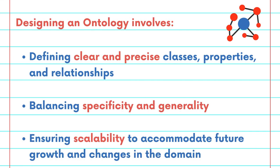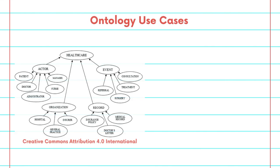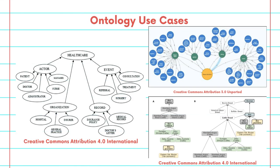Designing an ontology involves defining clear and precise classes, properties, and relationships to avoid ambiguities and overlaps. It also involves balancing specificity and generality to ensure the ontology is neither too narrow nor too broad, and ensuring scalability to accommodate future growth and changes in the domain. Through examples from sectors like healthcare, technology, and environmental science, we'll see how well-designed ontologies provide a clear structure for large datasets.